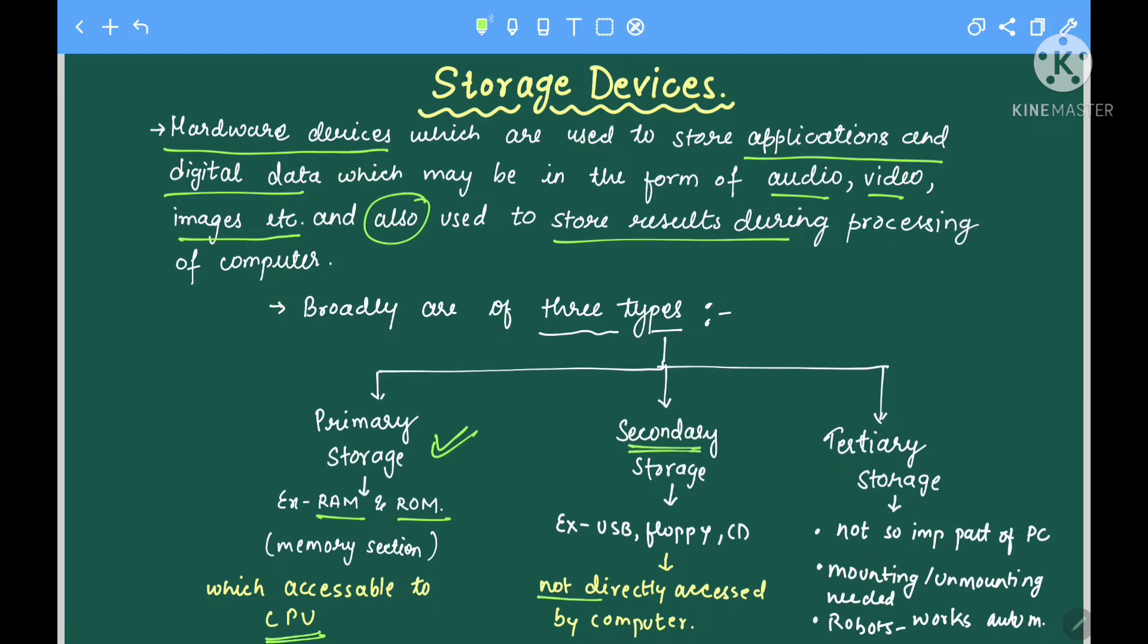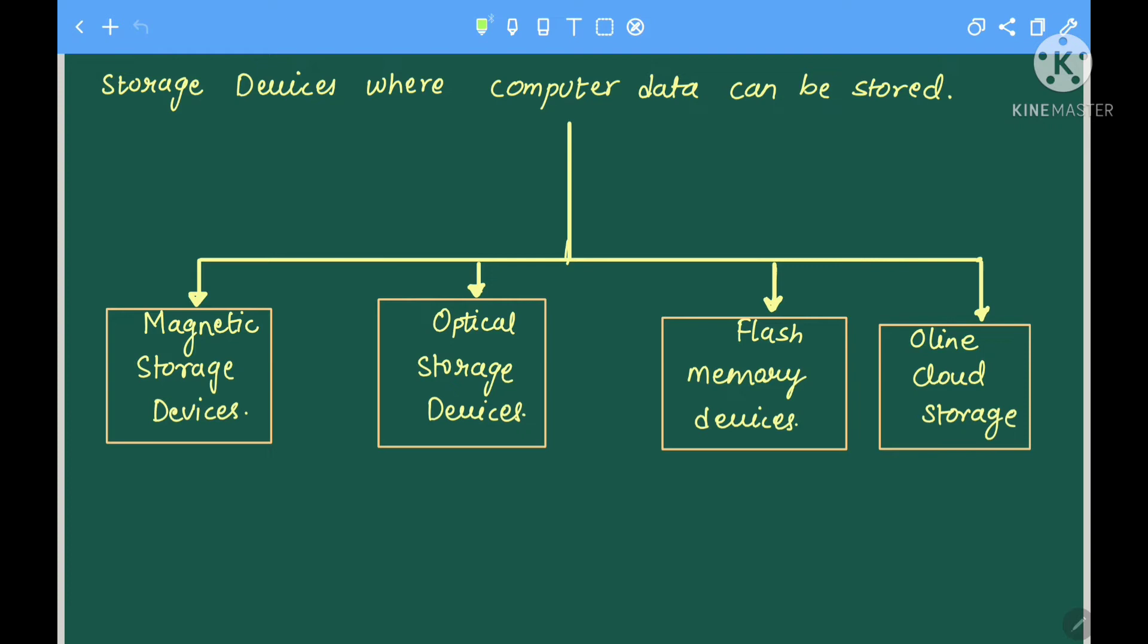Secondary storage devices are not directly accessible by CPU - they are USB, floppy disk, CD, etc. Tertiary storage devices need mounting and unmounting, like robots that do automated work. They store some instructions and data. Now we will learn what are the exact storage devices where computer data can actually be stored.